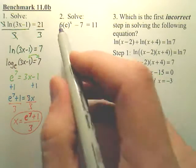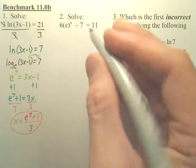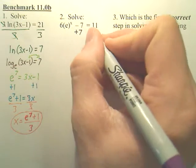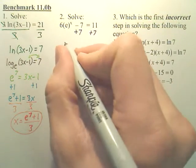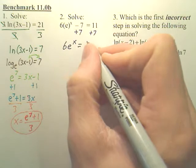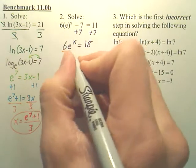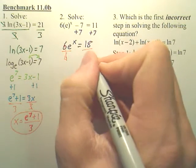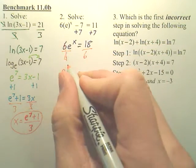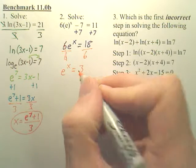Number two. I want to solve this. So I want to get e to the x by itself. So the first step, move the 7 over. That'd be 18. Next, you've got to get rid of the 6 that's held by multiply, so we divide 6 off. So we have e to the x equals 3.